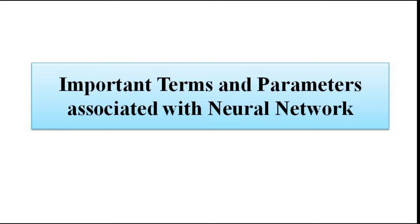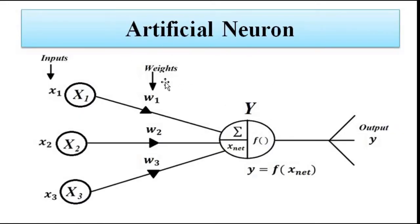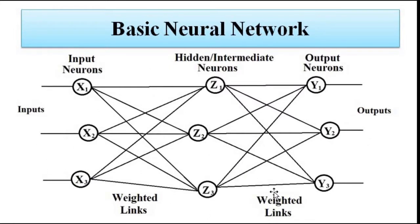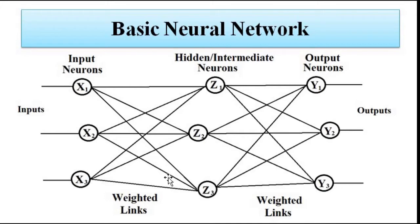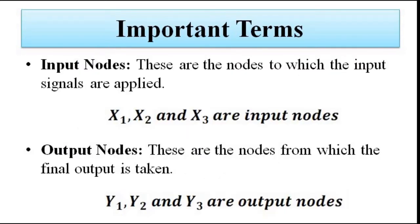We have already discussed that this is how an artificial neuron looks like, and a group of these nodes or neurons form a neural network which looks something like this. This is a simple neural network consisting of a total of 9 neurons, but in actual cases the neural networks that are designed artificially are much more complex and complicated in their designing, structure and function. In this neural network there are various things that we have to discuss about.